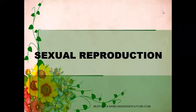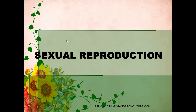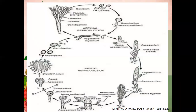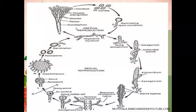Sexual Reproduction of Penicillium. Penicillium fungi participate in sexual reproduction in unfavorable conditions. Sexual reproduction occurs in unfavorable conditions, while asexual reproduction occurs in favorable conditions.